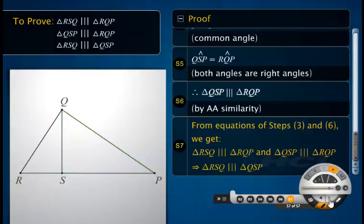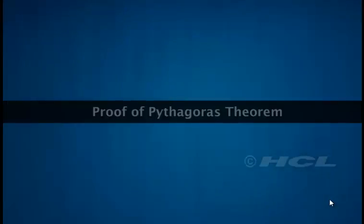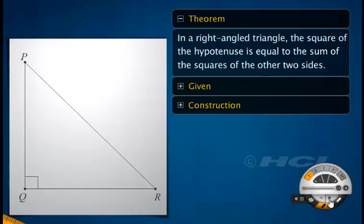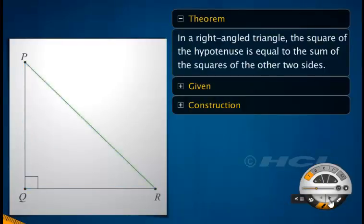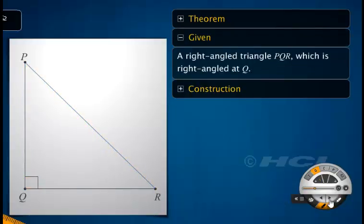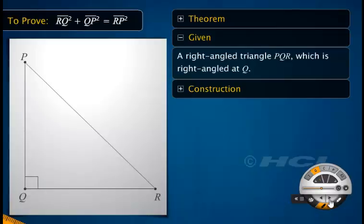Let's now use this theorem to prove the Pythagoras theorem. The Pythagoras theorem states that in a right-angled triangle, the square of the hypotenuse is equal to the sum of the squares of the other two sides. We are given a right-angled triangle PQR which is right-angled at Q. We have to prove that the sum of the squares of sides RQ and QP equals the square of the hypotenuse RP.